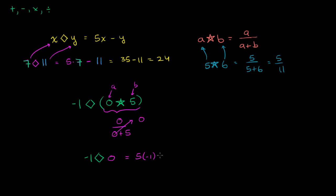x is negative 1, minus y. Well, y here is the 0. Minus 0. So 5 times negative 1 is negative 5. And you will see, and the idea here is just to make you feel comfortable defining new operators like this.